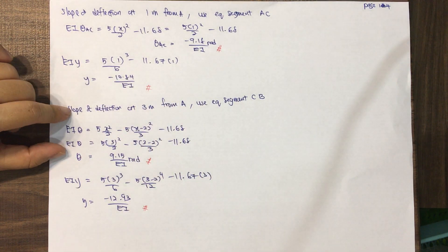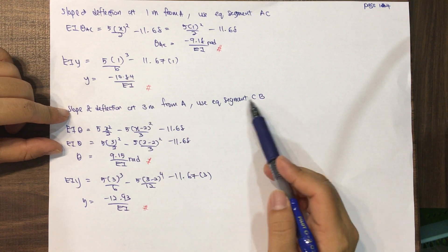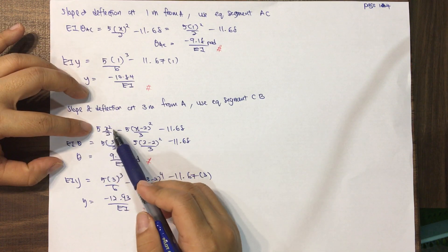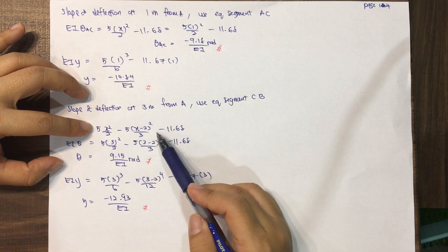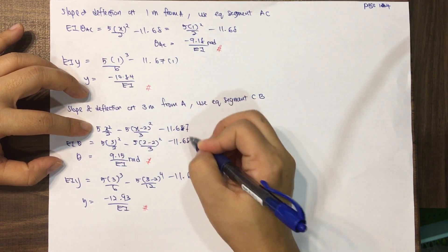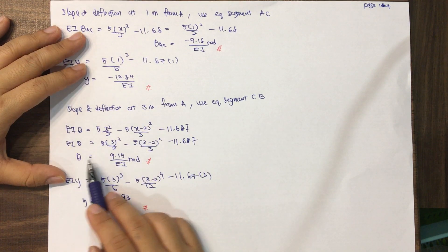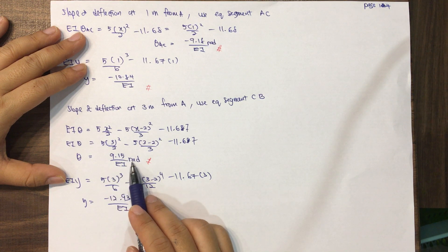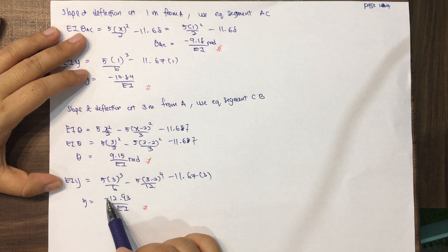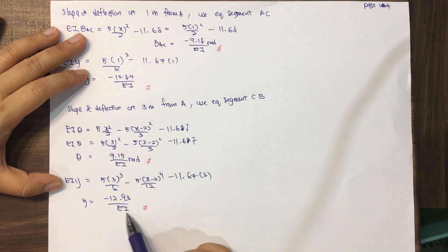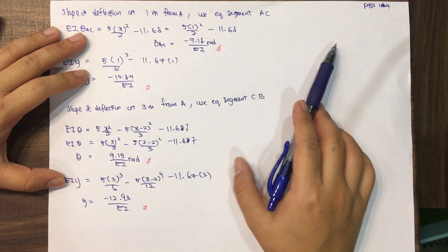For slope and deflection at 3 meters from A, we use the segment CB equations. Substituting X equals 3, we get theta equals 9.15/EI radians, and Y equals negative 12.93/EI. Note: if the value of EI is provided in the problem, you would substitute it to get numeric answers. This completes all the calculations. Thank you.